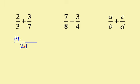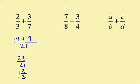7 goes into 21 three times, so I need to multiply the 3 by 3, which gives me 9, and I'm adding. 14 add 9 is 23, so my fraction is 23 over 21, but this is an improper fraction — it's top-heavy. 21 goes into 23 one time with a remainder of 2, so I have 1 and 2 over 21 as my answer.